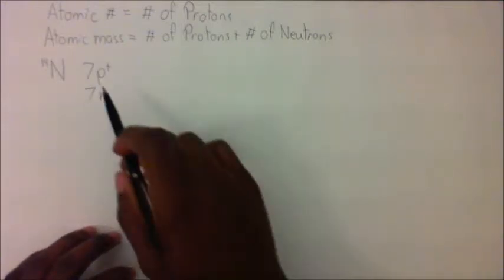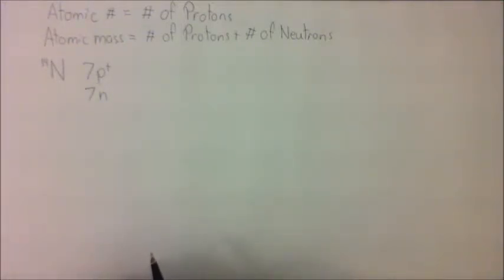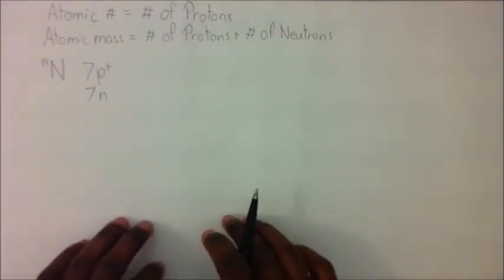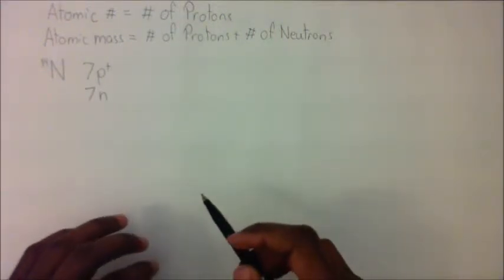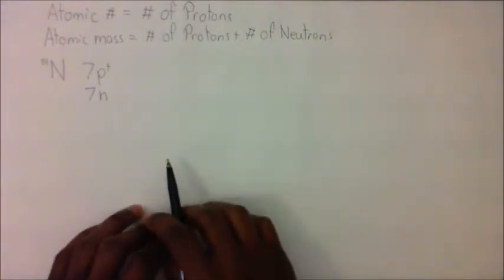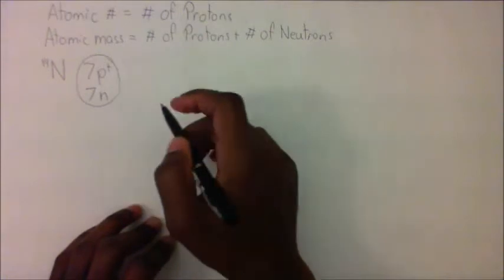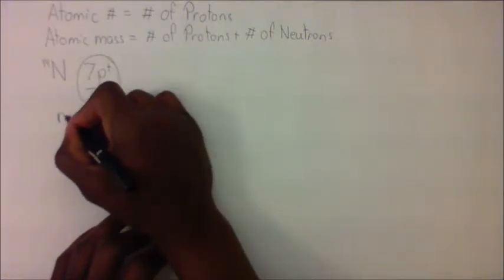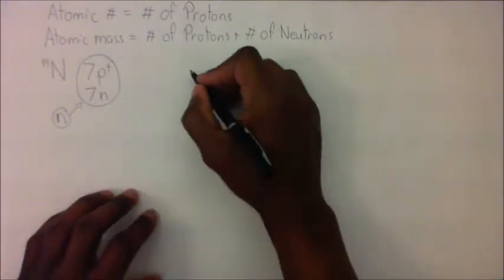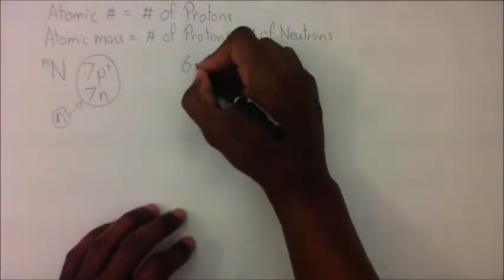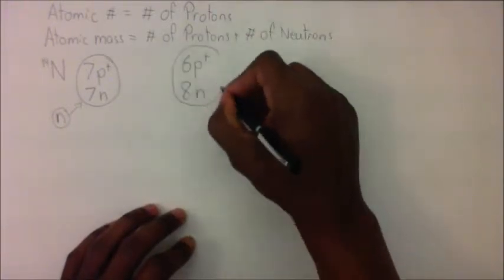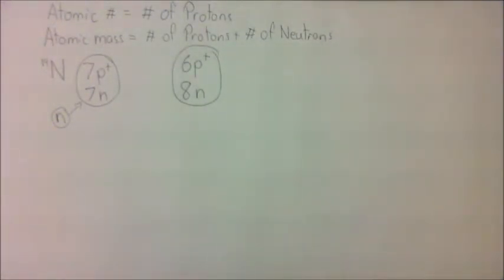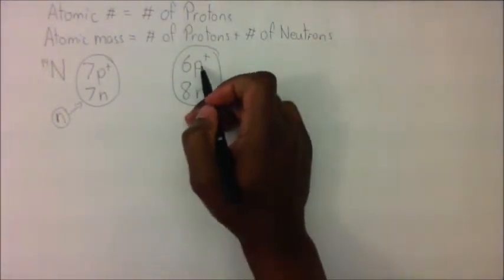Well, if a neutron collides with a nitrogen atom, and it collides with the nucleus, sometimes it can knock essentially a proton loose and replace itself. So essentially now, what will happen is that if it gets hit with a neutron, it will knock a proton loose, and so you now have 6 protons and 8 neutrons, and what you have left is no longer nitrogen because we've changed the atomic number. In fact, it is carbon.